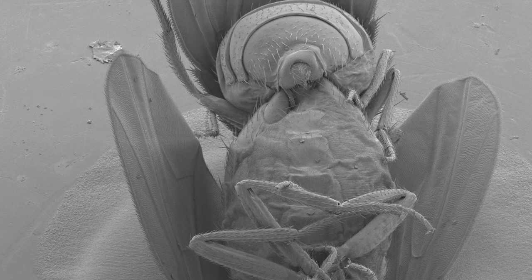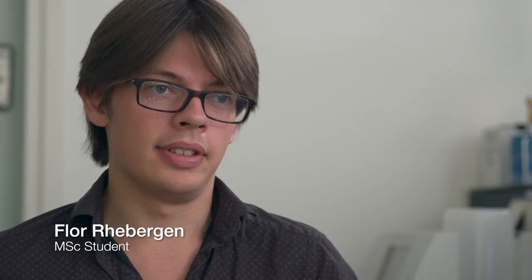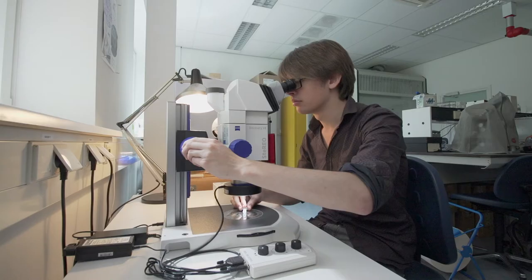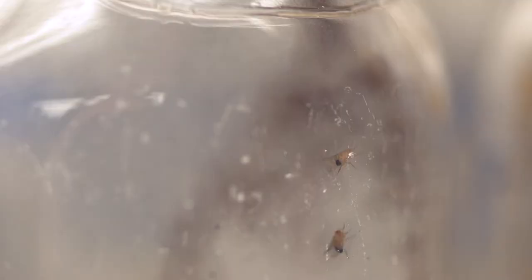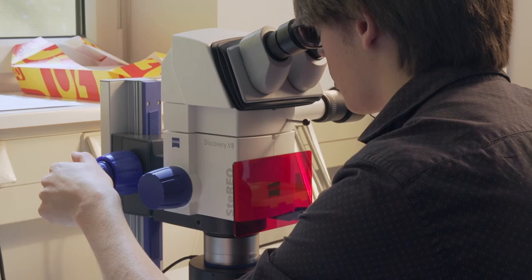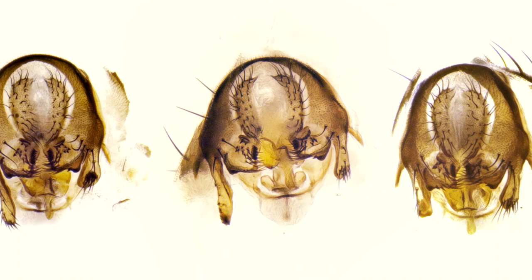I'm looking at what's called the functional morphology of genitalia, so that means that I look at what's going on during copulation — which parts go where. Truthfully, we don't know why asymmetries evolve in insect genitalia, but we think that it has to do with changes in mating position. One of the species we study is a tiny fruit fly called Drosophila pacchia. Using microscopic surgery, we can manipulate the shape of the fly's genitalia, and this way we can look for effects of asymmetry on mating position.